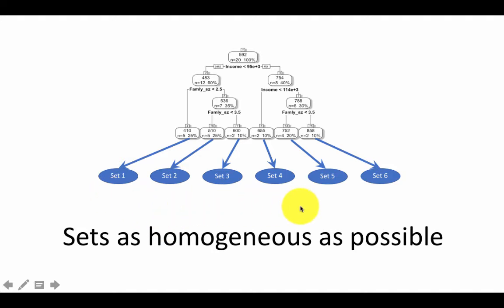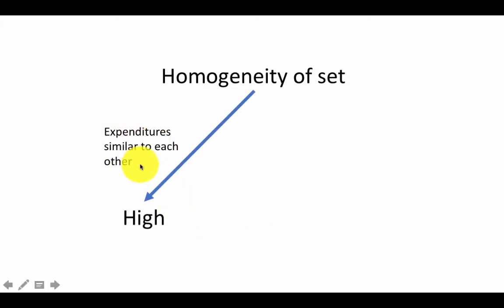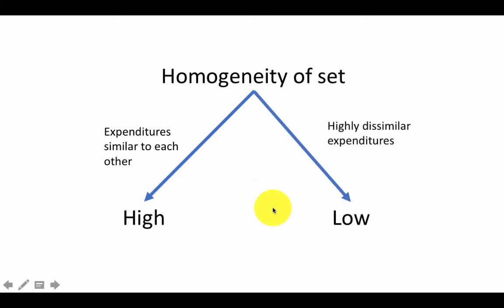What we are really trying to do is make each of these sets as homogeneous as possible — meaning all cases within a particular set should have a target value very close to the average. Homogeneity is high when expenditure values are similar to each other within a set, and low when there is wide variation. This is a gradation from high to low, and we determine homogeneity based on how close the expenditure values are to the average within a particular set.